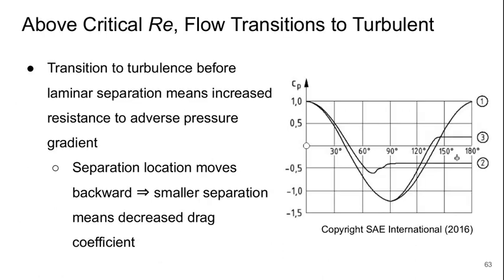What's happening is that above a critical Reynolds number, the flow transitions to turbulent. Basically, when we see that drop in drag coefficient, the flow is transitioning to turbulence before a laminar separation can occur. That means there's an increased resistance to adverse pressure gradient. The separation locations on the cylinder suddenly move backward for a small change in Reynolds number. That smaller separation means a decreased drag coefficient.